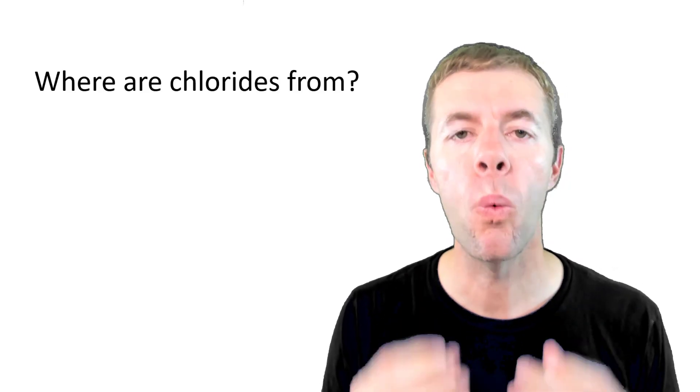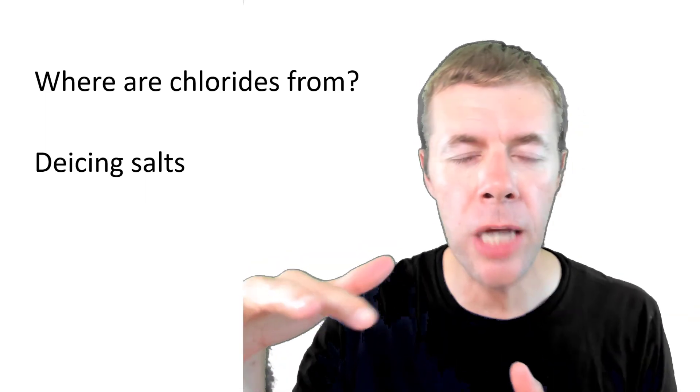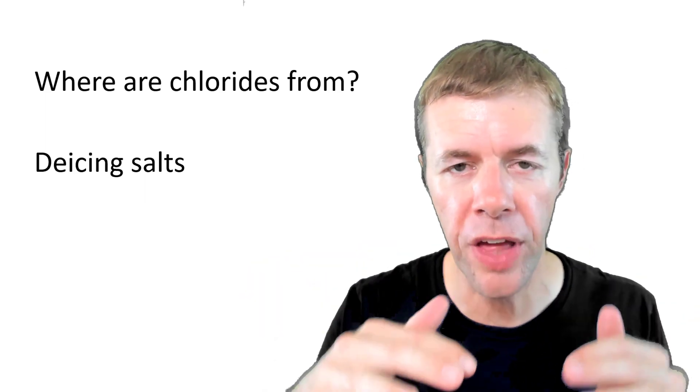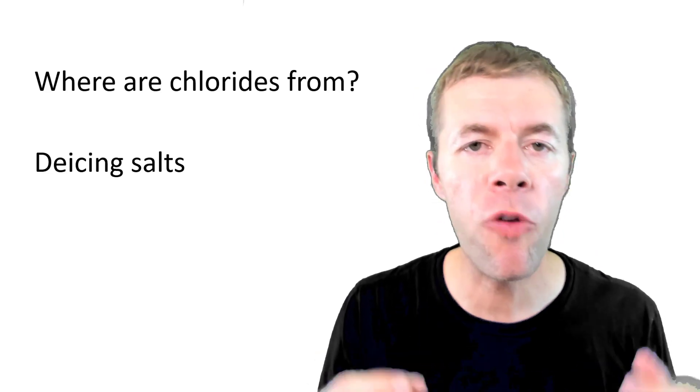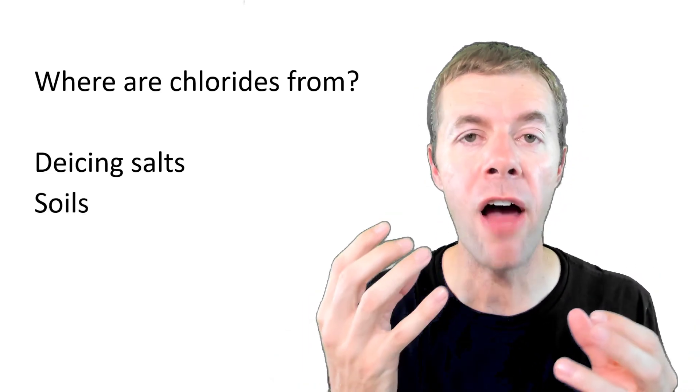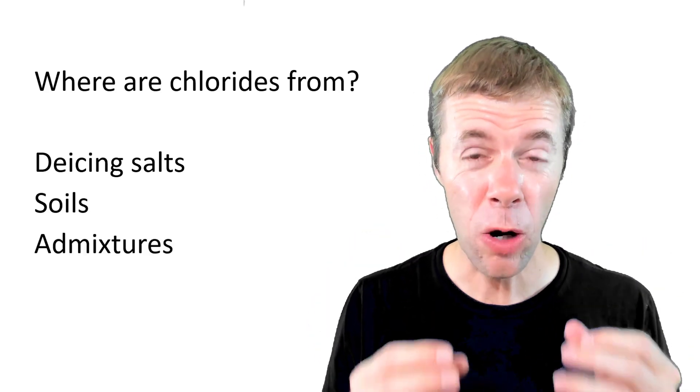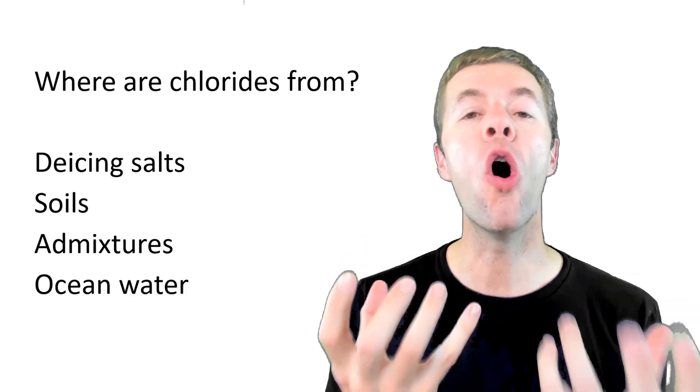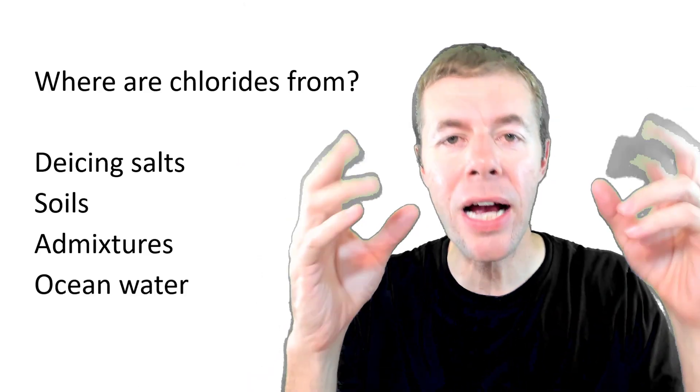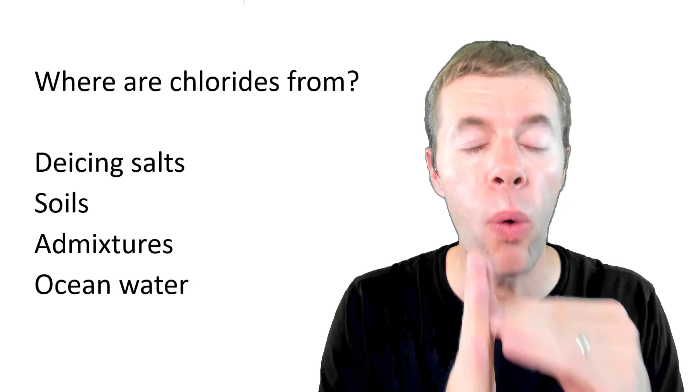So where do chlorides come from? Well, they may come from de-icing salts that we spray on top of our concrete roads to melt the ice. They also may come from the soils around our concrete structures that could have chloride deposits in them. It could come from admixtures that are mixed into the concrete. That should never happen by the way. Or they could come from ocean water that splashes up or sprays onto the concrete or is right next to it.